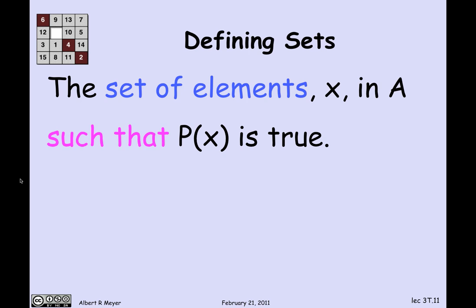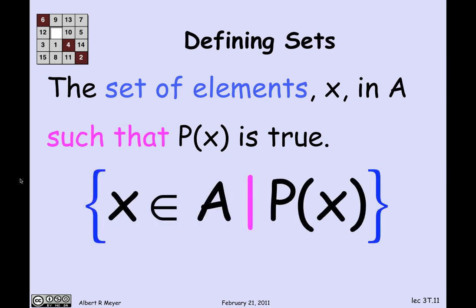When sets get complicated or infinite, you need a better way than listing elements. There's a notation for describing sets in terms of properties that characterize their elements: the set of all x in some known set A such that predicate P(x) is true — written with curly braces, the vertical bar read as 'such that.' For example, the set of even integers can be described as {n ∈ ℤ | n is even}.